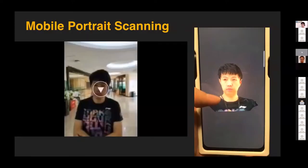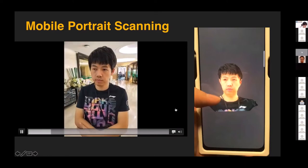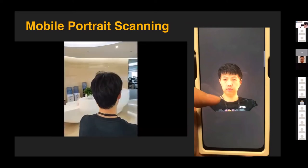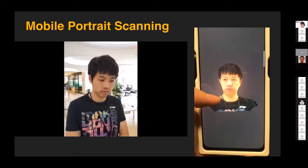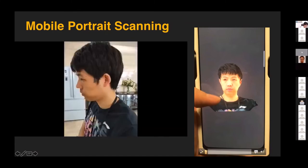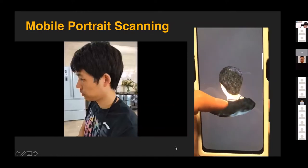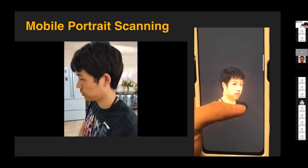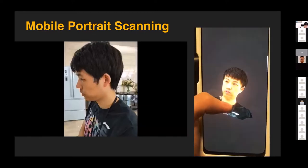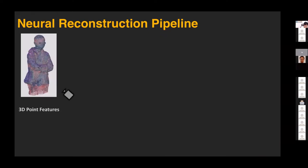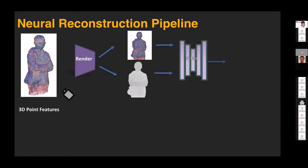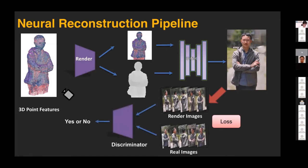We started working on extending this to mobile portrait scanning with OPPO, the cell phone manufacturer. They wanted us to use a cell phone to capture multi-view images of a person, then use SFM-type structure to recover the model. They also have requirements for real-time performance, which are very challenging. Our approach reuses this NHR pipeline, then uses a UNet to simultaneously fix the appearance and the geometry.